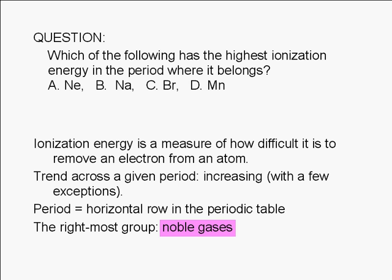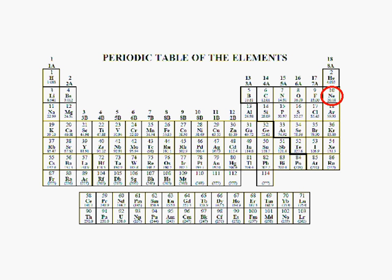Of the choices given here, only neon is a noble gas. You will find neon in column 18 in period 2. Among the elements in period 2, neon atoms have the highest ionization energy.